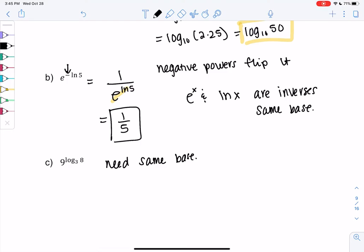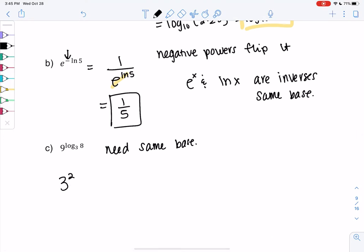So I know that 9 is 3 squared. So I'm going to rewrite 9 as 3 squared log base 3 of 8. So that would be 3 to the 2 times log base 3 of 8. And then before the 3 and the log 3 cancel out, I have to get rid of the 2.